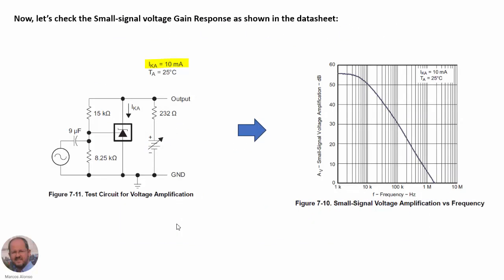Now that we have the model for our TL431 device, we are going to check the small signal voltage gain response as shown in the datasheet. Here we have the schematic provided in the datasheet to do this experiment with the device. And here we have the corresponding response — the small signal voltage amplification in dBs as a function of the frequency, which is the frequency response of the TL431.